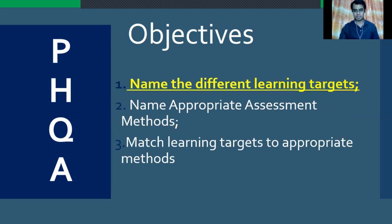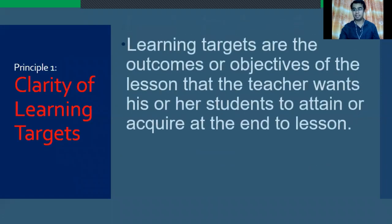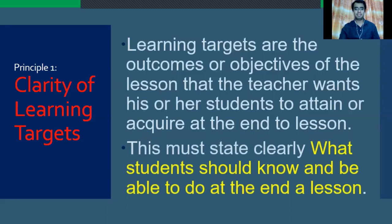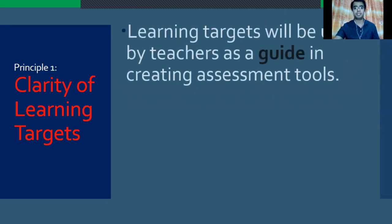Let us begin with objective number one. In principle number one, which is the clarity of learning targets, learning targets are outcomes or objectives of the lesson that the teacher wants his or her students to obtain or acquire at the end of the lesson. Thus, this must state clearly what students should know and be able to do at the end of the lesson, because learning targets will be used by teachers as a guide in creating assessment tools.